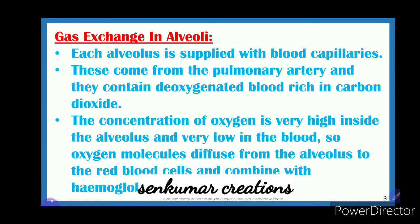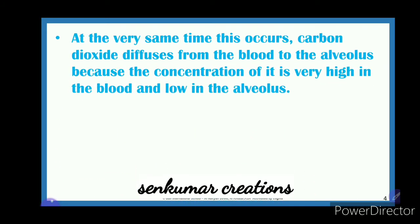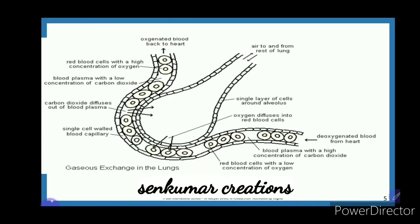Oxygen molecules diffuse from the alveolus into the red blood cells and combine with hemoglobin — forming oxyhemoglobin. At the very same time, carbon dioxide diffuses from the blood to the alveolus because its concentration is high in the blood and low in the alveolus. Both diffusions occur simultaneously.